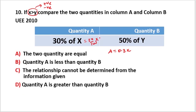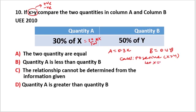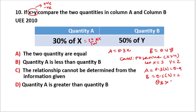Case one: positive c. Let x equals 3 and y equals 2, so x is greater than y. The value of quantity A equals 0.3 times 3 equals 0.9. The value of quantity B equals 0.5 times 2 equals 1. So quantity B is greater than quantity A.